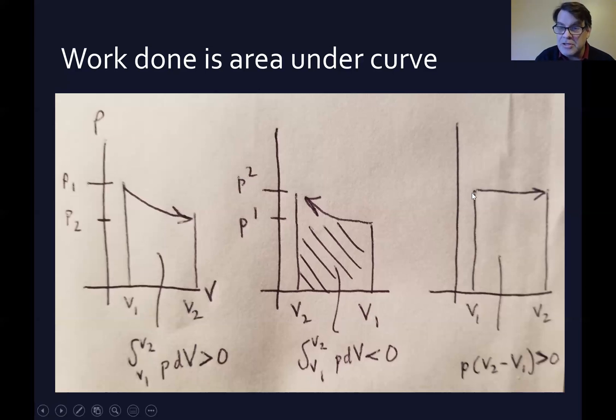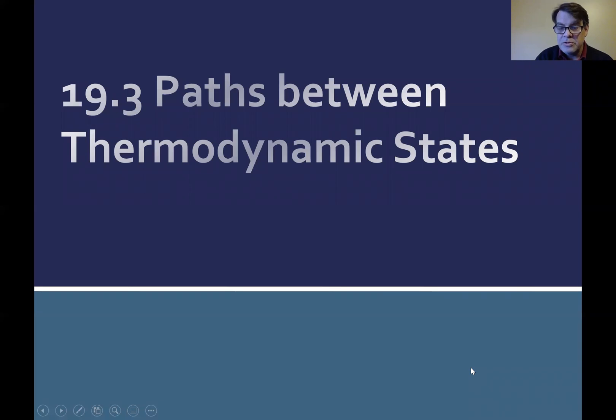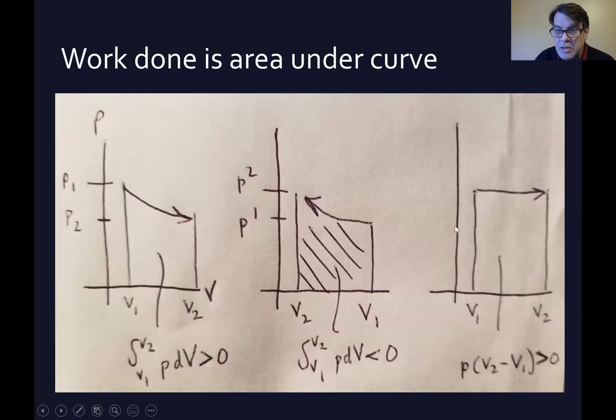Now if the pressure is constant, so let's say the pressure stays the same and the volume increases, then there's still work done, but it is simply the area under the curve here. The area of a rectangle is the length times the height. The pressure is constant P and then the volume is simply the difference between these two. It's going to be positive because it's going in this direction.